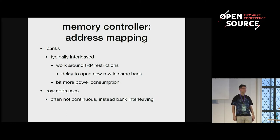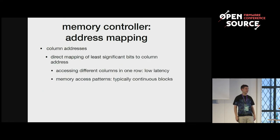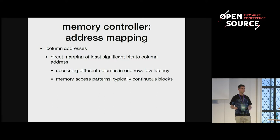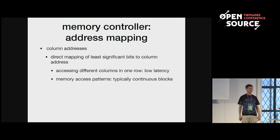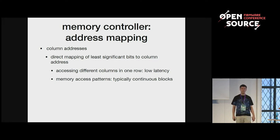Then there are the row addresses — the rows in the memory array. Those are often not mapped continuously; instead the banks are interleaved. Finally, we have the addresses in the columns. Typically the lower bits of the memory address get directly mapped to the offset inside the column, because it's quite common to just read a continuous segment of memory. Also, the latency of accessing different columns in one row is quite low because you don't have to close the row and reopen another row.